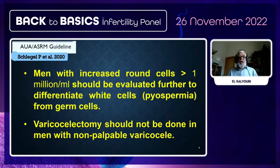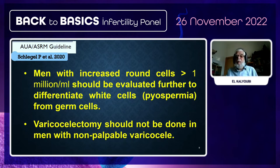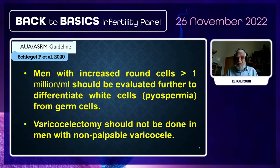According to guidelines from the American Society of Reproductive Medicine in association with the American Urological Association, if a sperm analysis shows many round cells, ask the lab to differentiate between round spermatids and white blood cells. If leukospermia is confirmed, refer the patient to a urologist. If an ultrasound report shows varicocele, do not rush for varicocelectomy — it must be palpable clinically before advising the patient.